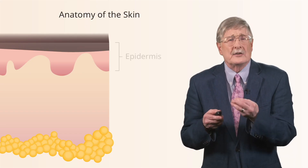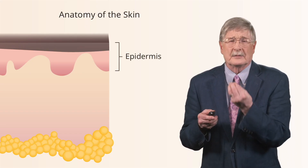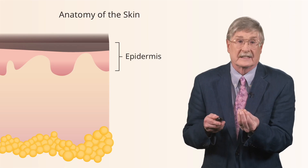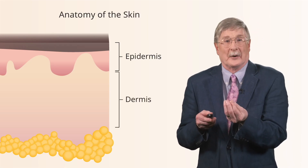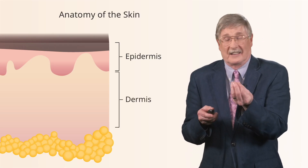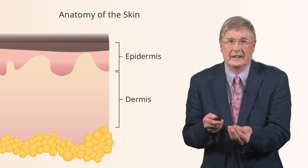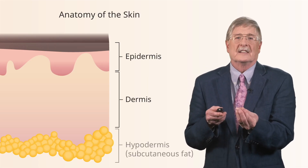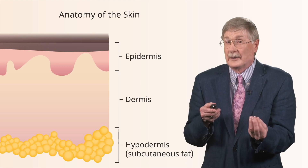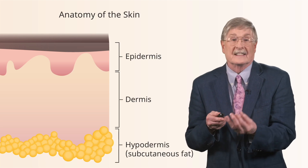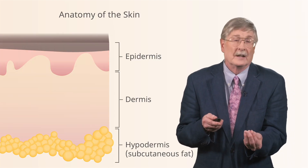The skin is divided into the epidermis, where we have the epithelial cells, which sits on top of the dermis. Underneath the dermis is the hypodermis — I'll more commonly refer to that as the subcutaneous fat. So those are the three major layers of the skin. Let's dissect that out a little further.